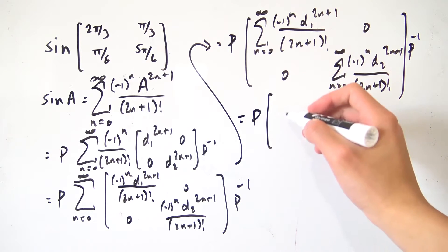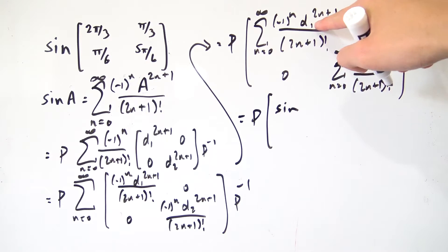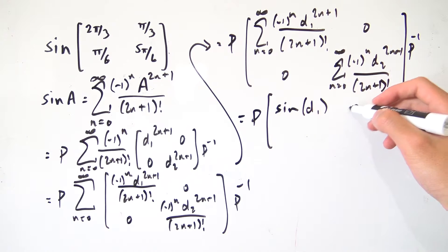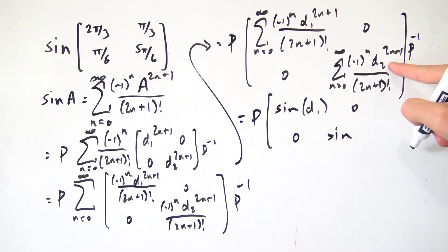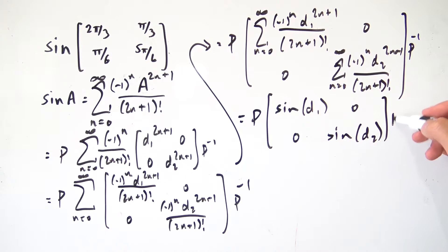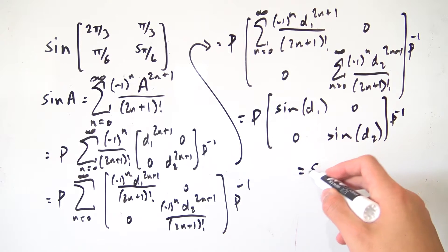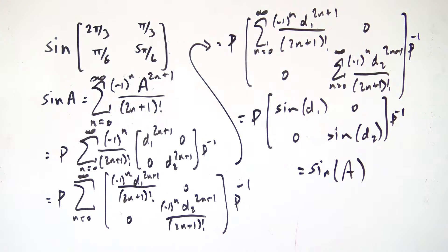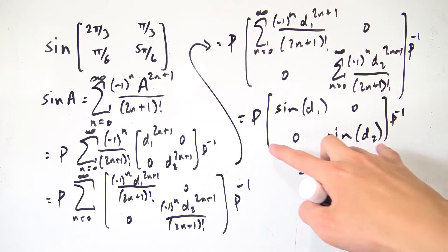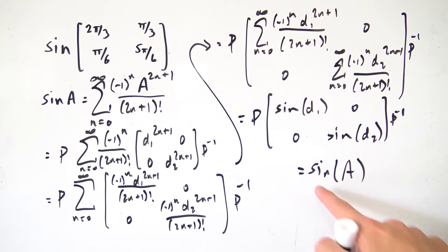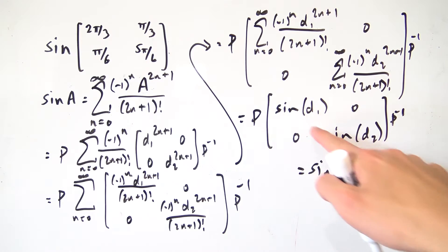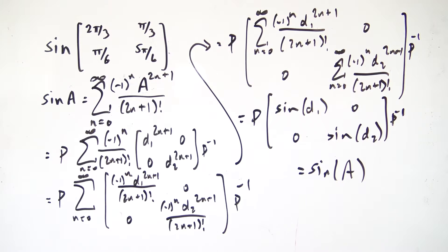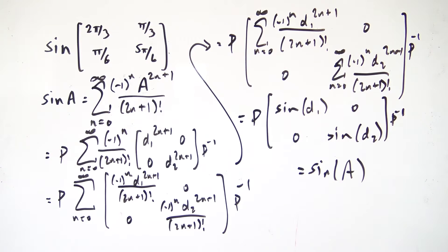So we can simplify this down to P times the matrix with sin(d₁), 0, 0, sin(d₂), times P⁻¹. This is the sine of our matrix A. Overall, we've found the formula: if A is diagonalized as PDP⁻¹, then sin(A) equals P times the diagonal matrix with the sines of the diagonal entries of D, times P⁻¹. Now on to the example.